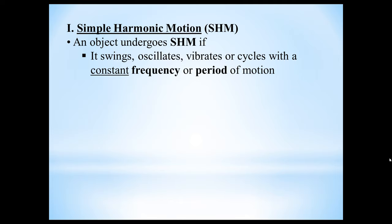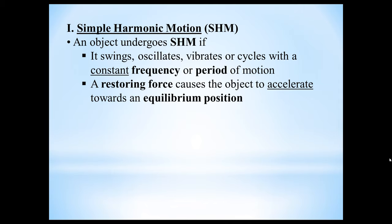It might seem at first glance that objects undergoing uniform circular motion would fit this criteria, because objects undergoing uniform circular motion do so with a constant frequency or constant period. However, they're not going to meet the second criteria. The second criteria is for an object to undergo SHM, there needs to be a restoring force that is always causing the object to accelerate towards an equilibrium position — something that does not happen for objects in uniform circular motion.